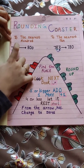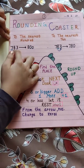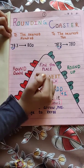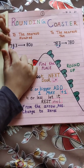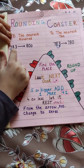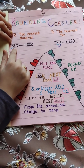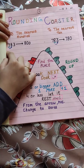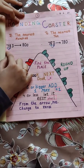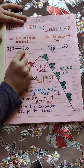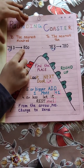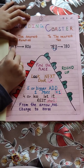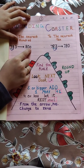Now we will see rounding to the nearest hundred. We have hundreds, tens and ones. First, we will find the place at hundreds and look next door. Five or bigger, add one more — this number is bigger than five, so we will add one number at the hundreds place, making it eight. From the arrow numbers, change to zeros, so both numbers will change to zero.